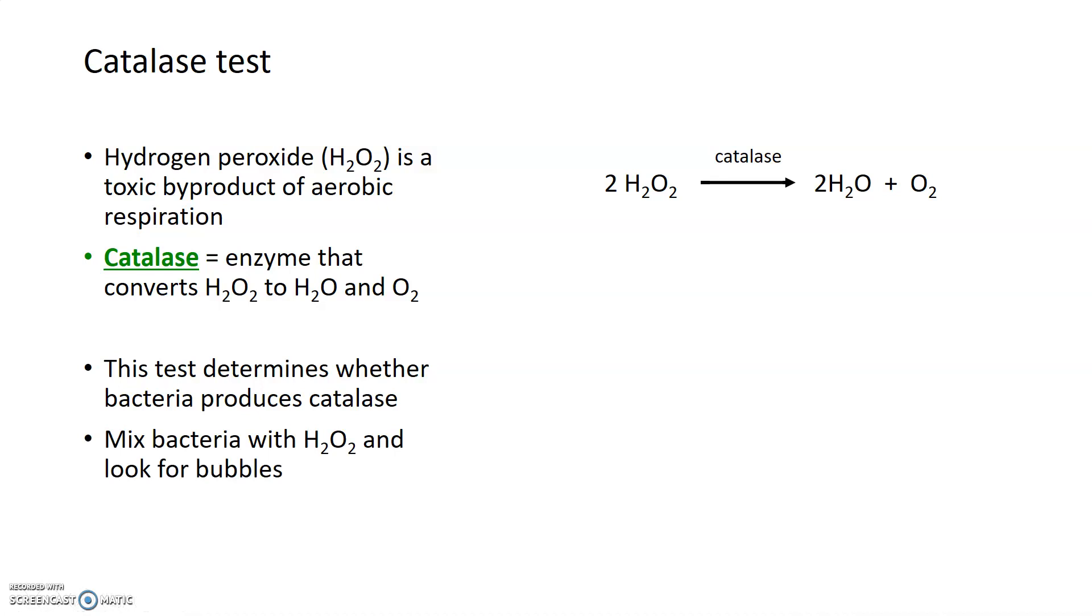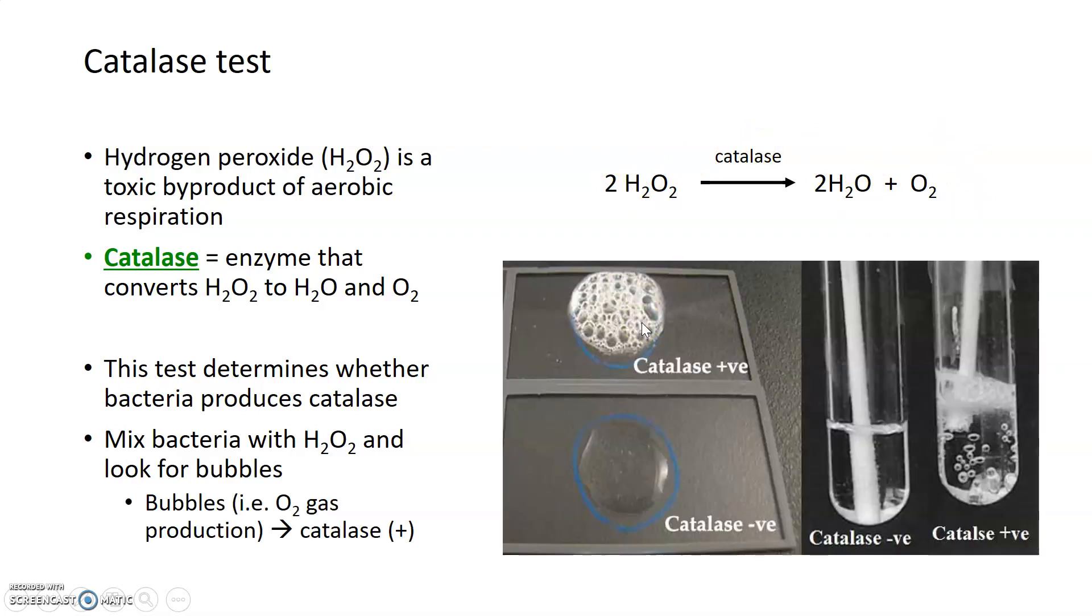It's really simple. You take a bacterium, you mix it with hydrogen peroxide, and then you look for the presence of bubbles. Any bacteria that produces catalase will be able to convert the hydrogen peroxide into H2O and oxygen gas. And we'll see bubbles.